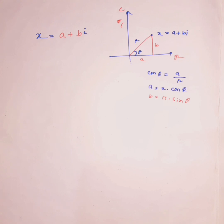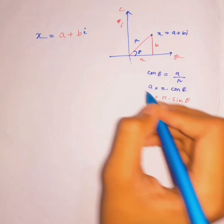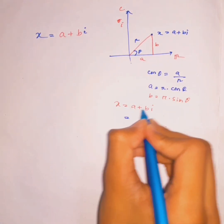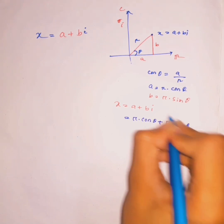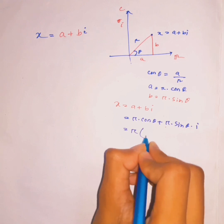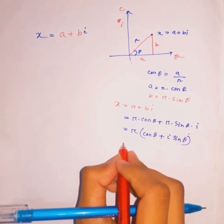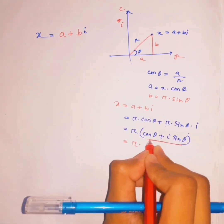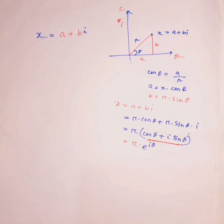So x equals a plus bi, which means r·cos(θ) plus i·r·sin(θ). Factoring out r gives r times (cos(θ) plus i·sin(θ)). By Euler's identity this equals r·e^(iθ), which is the polar form of x.